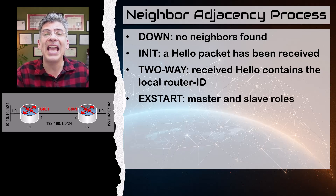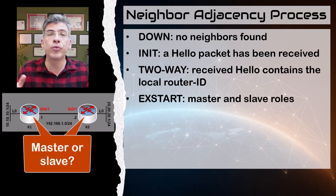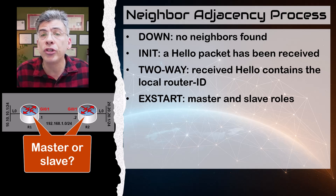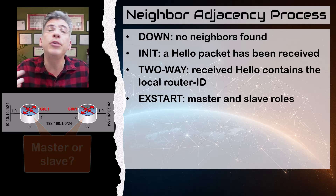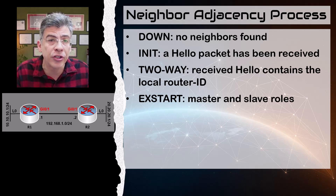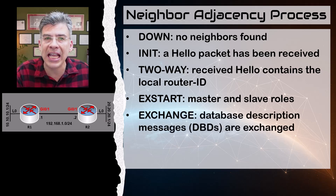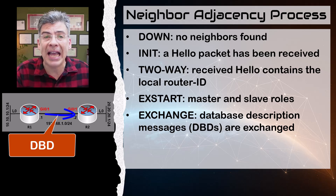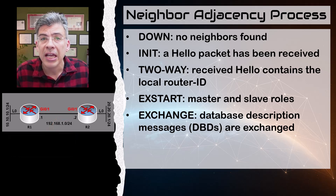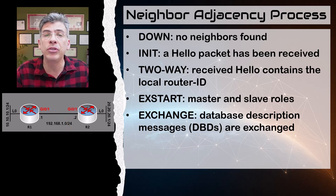Next, we have the XStart state, and this is entered when the master and slave roles are determined. These roles must be determined between the two neighbors to define the way in which the neighbors will communicate, specifically which router will be the first to exchange information. Next, we enter the exchange state. In this state, the database description packets, or DBDs, are exchanged. This is where the actual networks begin to be advertised between neighbors.